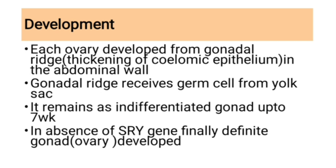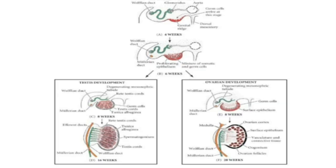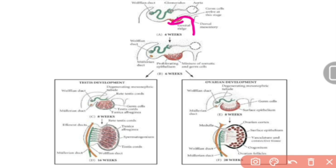If the testis does not develop, the ovary develops. From the figure of ovary development: the gonadal ridge is the thickening of coelomic epithelium. Germ cells travel through the dorsal mesentery from the yolk sac to the gonadal ridge. Proliferation occurs, forming surface epithelium, and primordial germ cells are formed. The surface epithelium is derived from coelomic epithelium, germ cells are of endodermal origin from the yolk sac, and medulla is of mesenchymal origin.